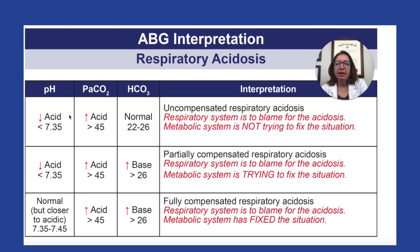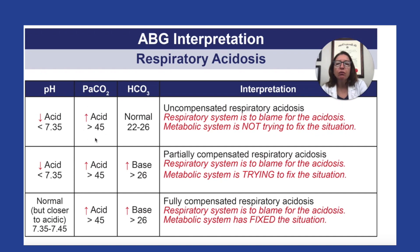When we look at the pH, if the pH is under 7.35, that means we have acidosis. That's the first step of our process. So now we're going to figure out who's to blame. When we look at PaCO2, if that is over 45, that is indicative of respiratory acidosis. So we know that the respiratory system is to blame — we have respiratory acidosis.